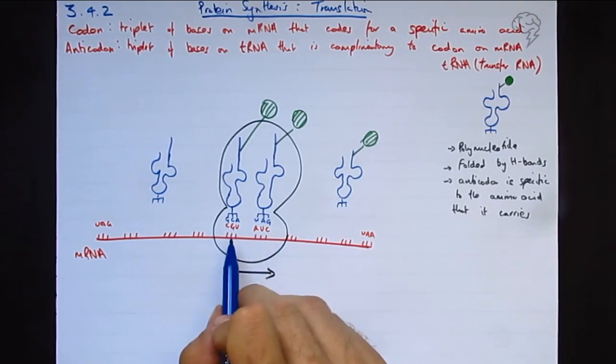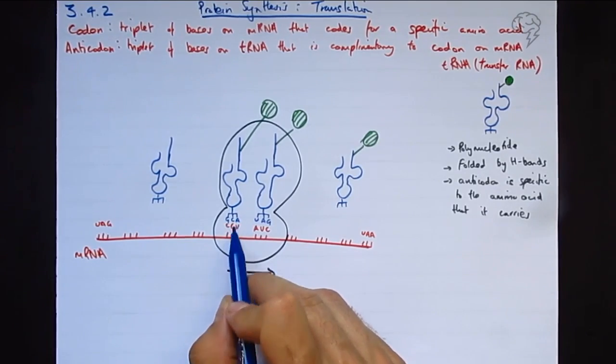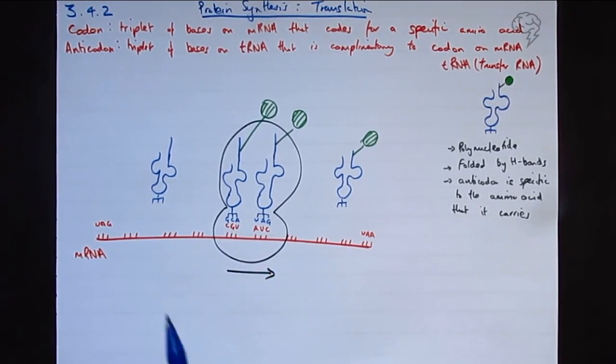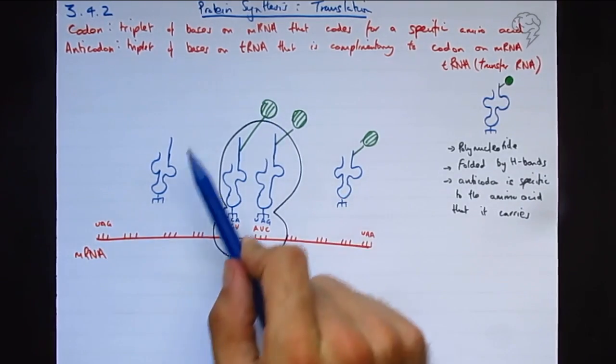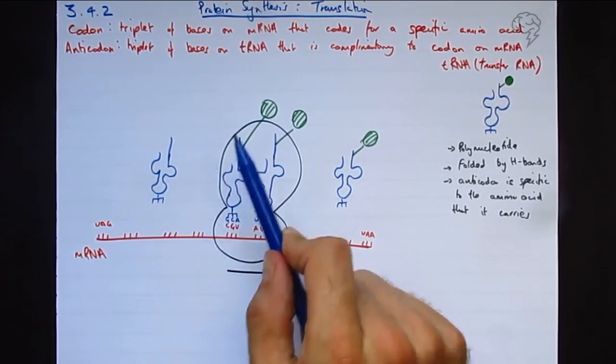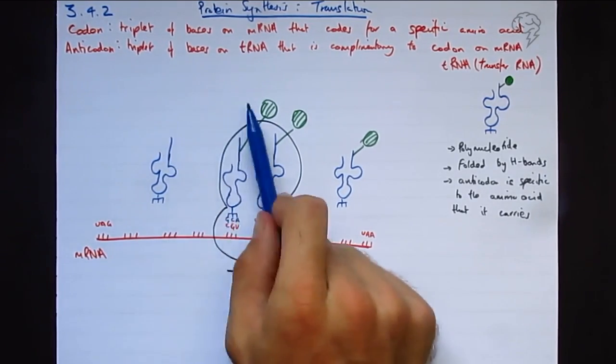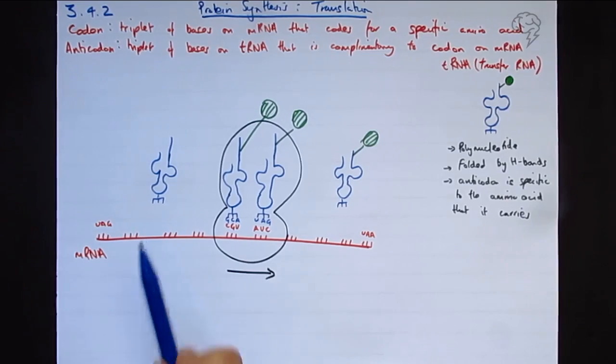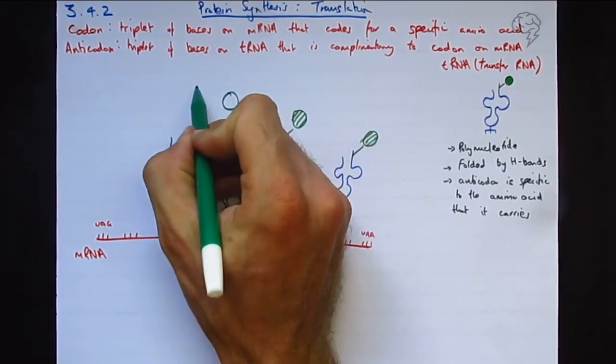So these codons and anticodons are always going to be complementary—complementary base pairing. The ribosome binds on at the start codon, reads its way along. I should have one, two, three—I've got three codons here, and it's already read these ones. These are in the past, so what we should have is three other amino acids in here.